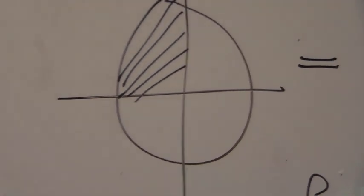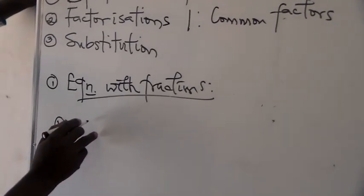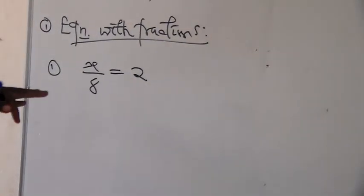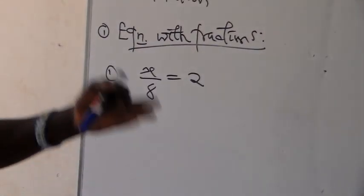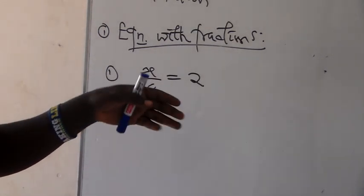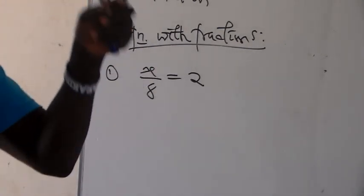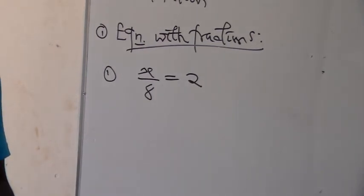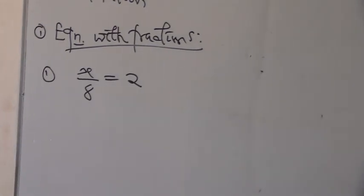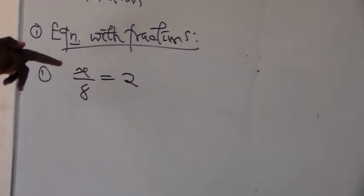Now when we are talking about equations involving fractions, we have examples. Let's say x over 8 is equal to 2. This is an equation because it is divided into two parts: the left-hand side and the right-hand side. For this to be called an equation, what is on the left-hand side is the same as what is on the right-hand side. When you look at it, they may not look the same, but when you solve it, you will understand that it is truly an equation.